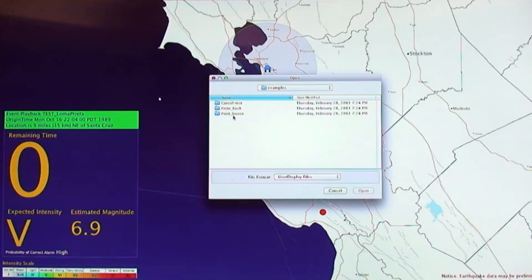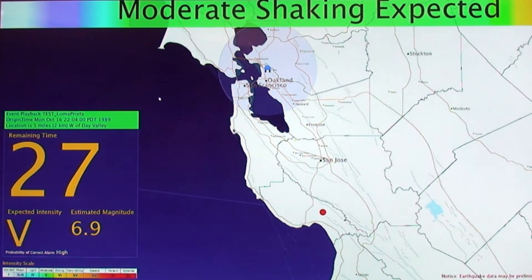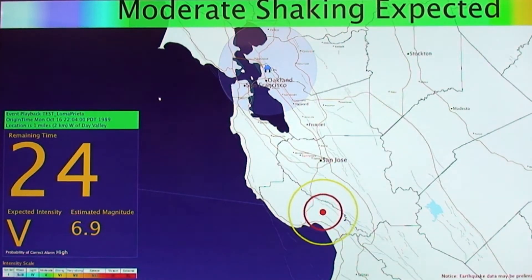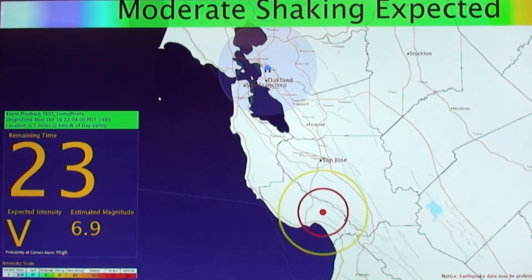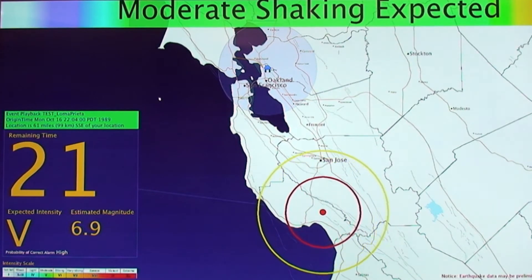Let me start the event and you can see the waves starting out. You can see the P waves are a little bit faster than the S waves, which come later.